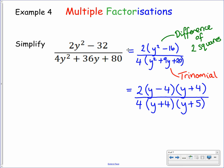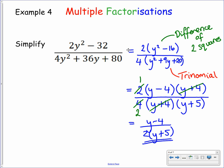Now that we can clearly see the factors for each, we can think about what to cancel. The 2 and the 4 cancel, leaving a 1 and a 2. We also cancel the common factor of y plus 4. So in its simplest form this fraction becomes y minus 4 over 2 bracket y plus 5, and we've fully simplified this fraction. Pause the video and take note of this into your jotter.